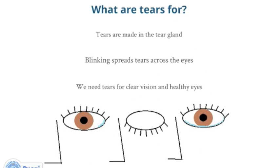Let's first look at what tears are for. Tears are produced continuously by the tear gland under the upper eyelid. They are spread evenly across the eyes each time we blink and are essential for clear vision and comfort of the eyes. They also wash away dirt and germs.